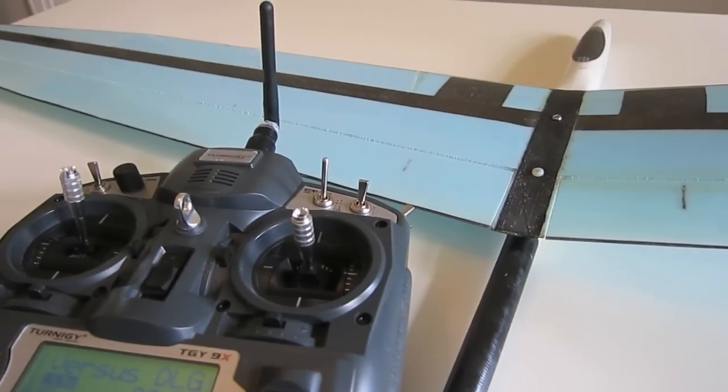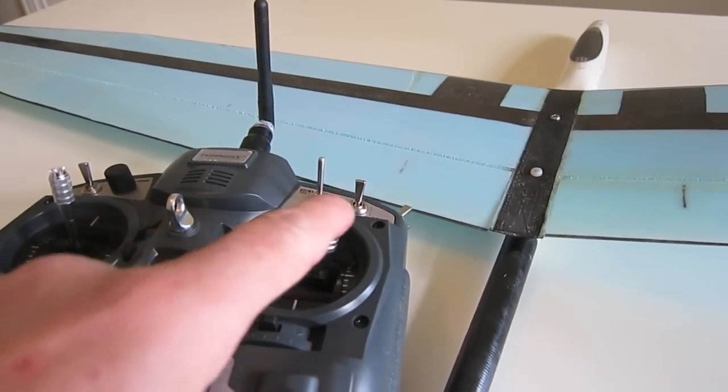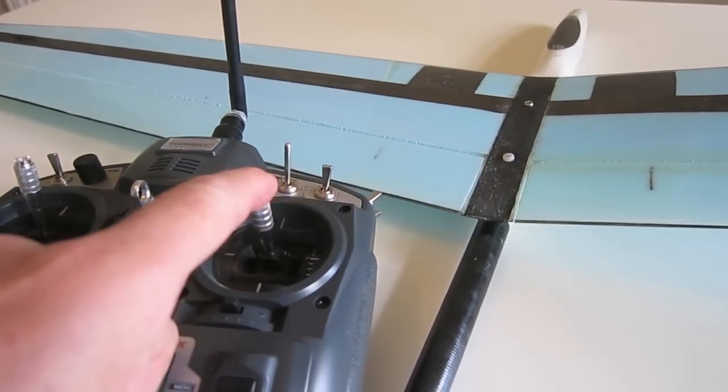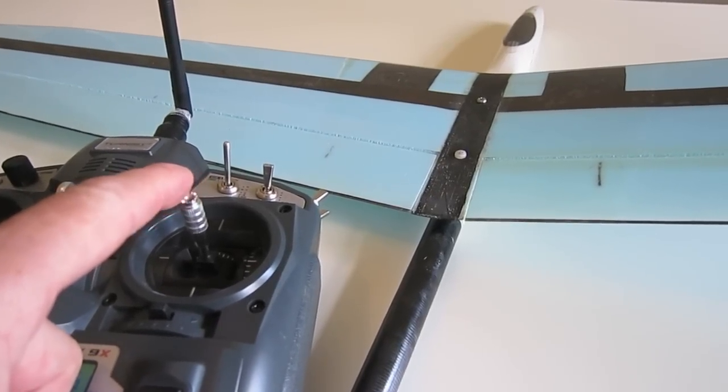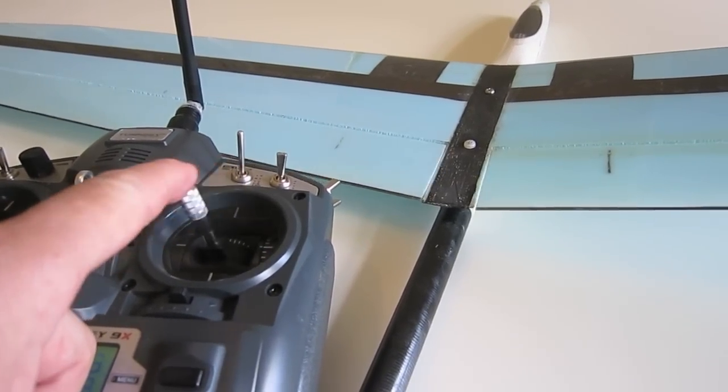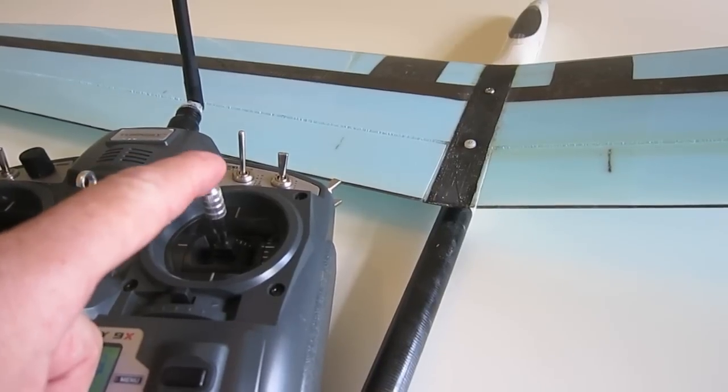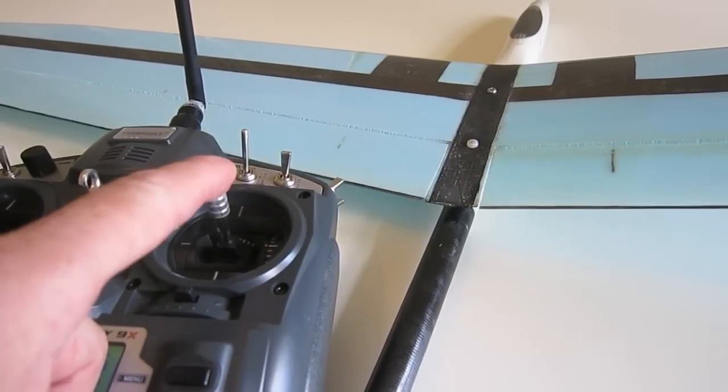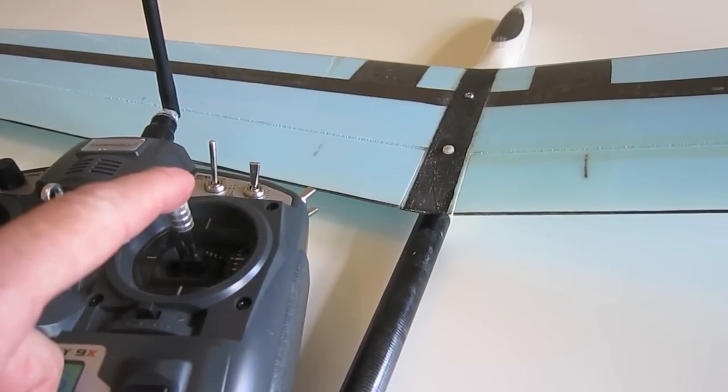Now starting with the ailerons, I just have them on the right stick. I have a fair bit of expo set up so that it's nice and calm around the center movement of the stick and still go full travel.